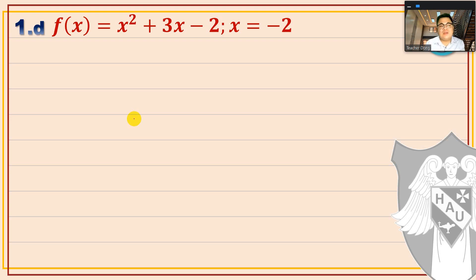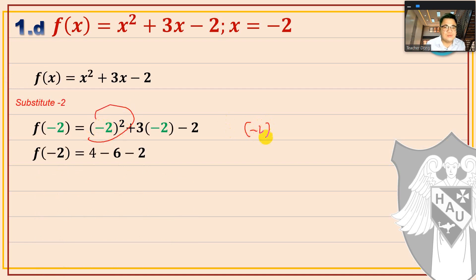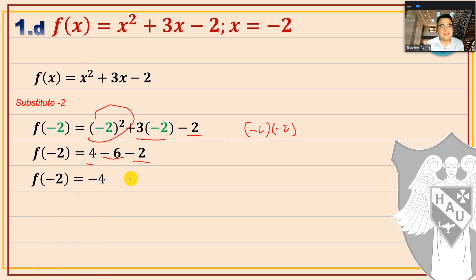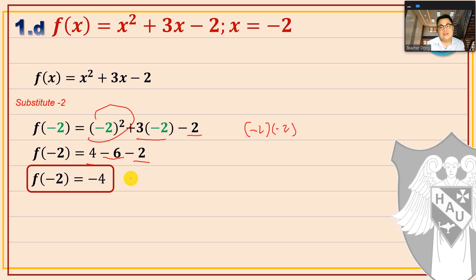For x = -2: f(-2) = (-2)² + 3(-2) - 2. Simplify: (-2)² = 4 (negative × negative = positive), and 3 × (-2) = -6. So f(-2) = 4 - 6 - 2 = -4. Therefore f(-2) = -4.